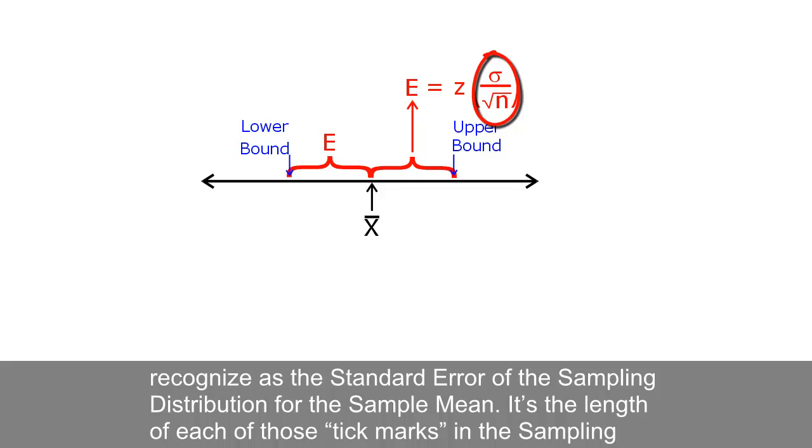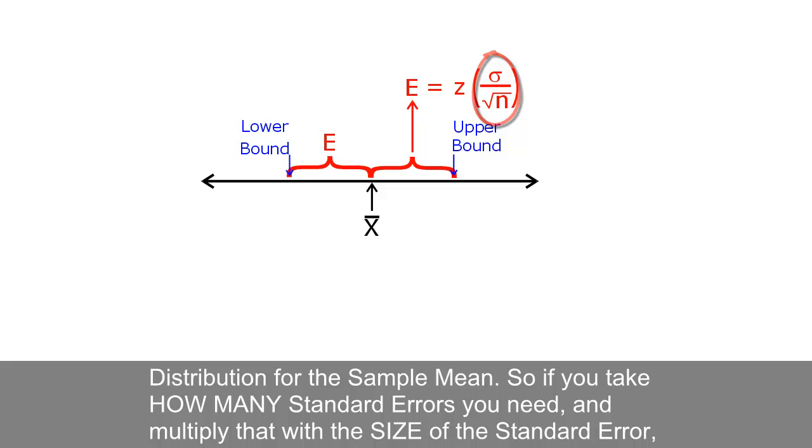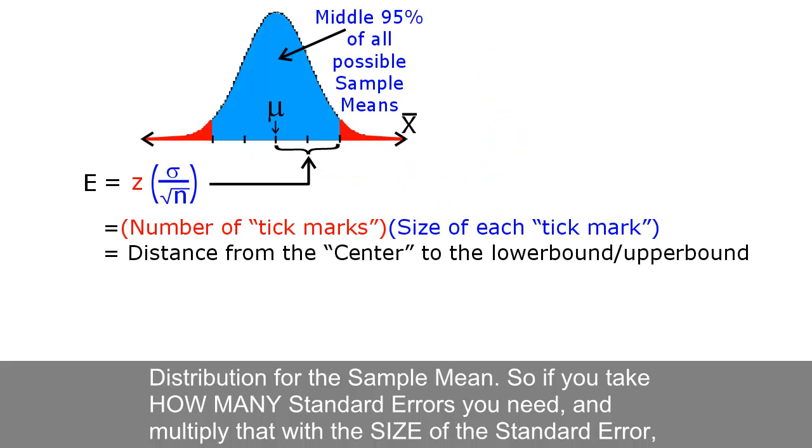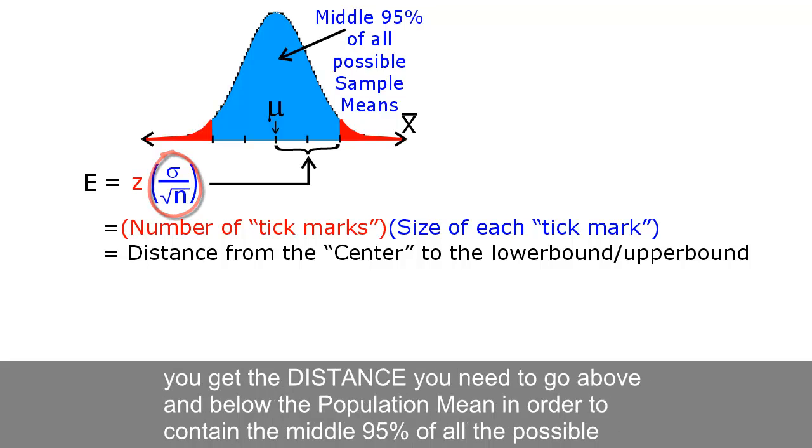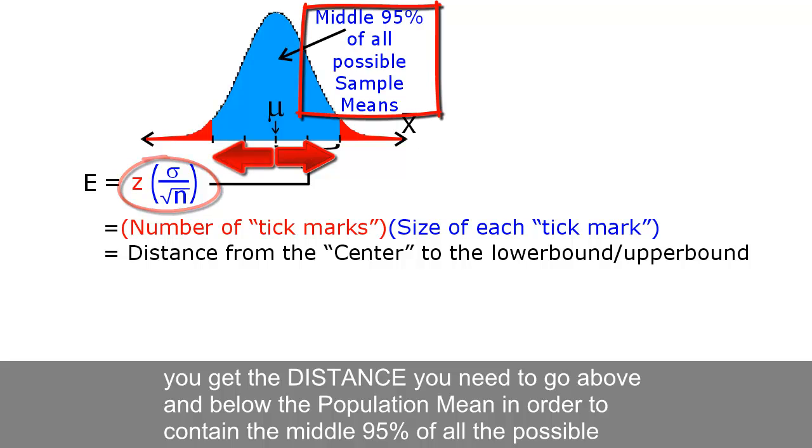It's the length of each of those tick marks in the sampling distribution for the sample mean. So if you take how many standard errors you need and multiply that with the size of the standard error,